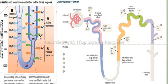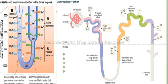Now I will zoom into the structure of the loop of Henle. The descending limb of the loop of Henle is highly permeable to water but impermeable to electrolytes. The ascending limb is nearly impermeable to water but highly permeable to electrolytes — sodium, potassium, and chloride. So in the loop of Henle, water and electrolytes are reabsorbed back into the body.